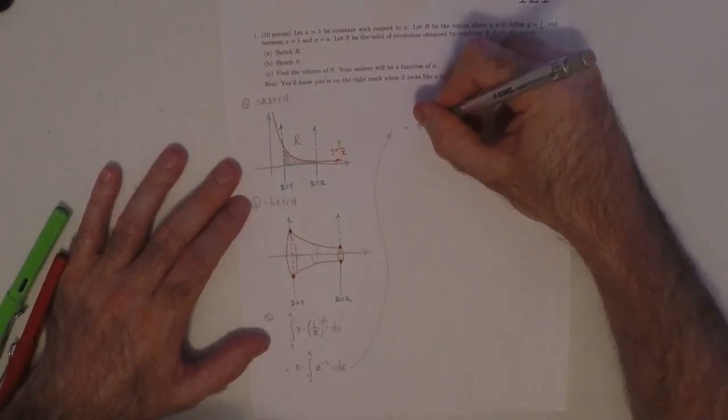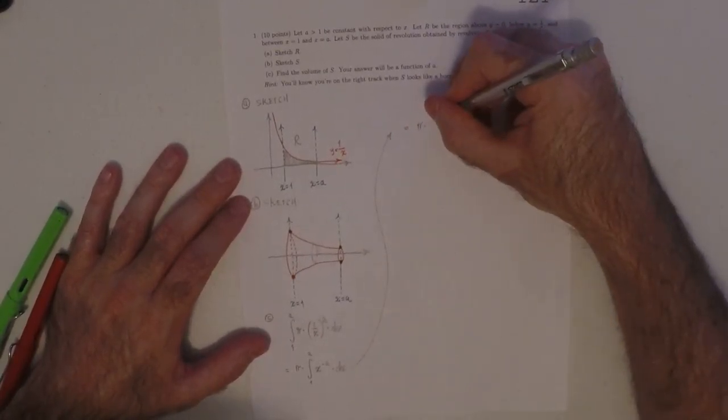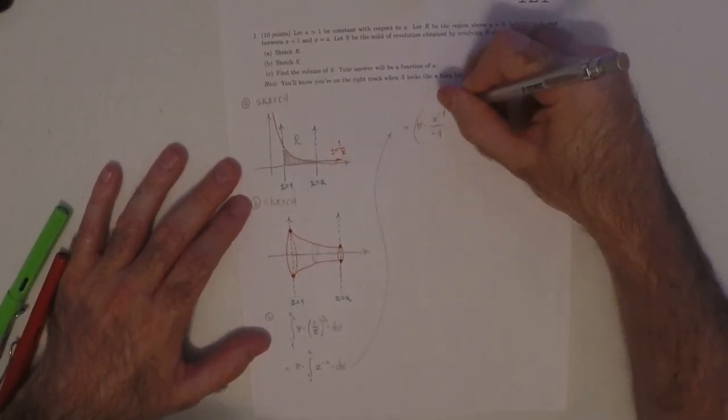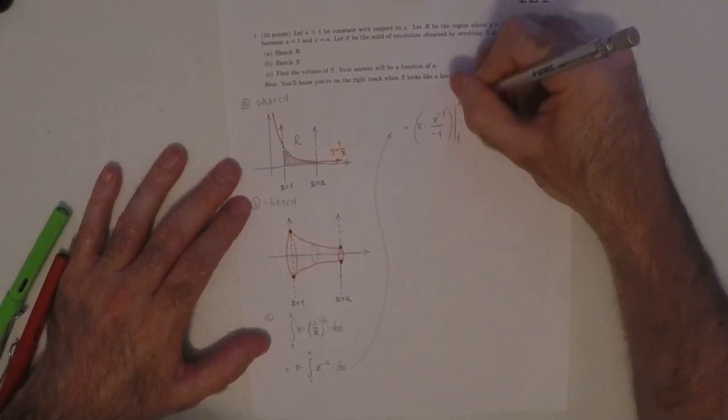So this would be pi, and then x to negative 1 divided by negative 1, and then boundary evaluate from 1 to A.